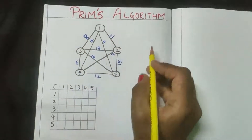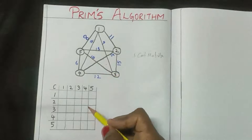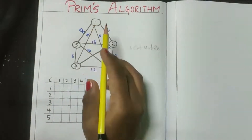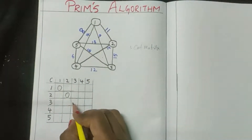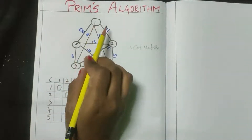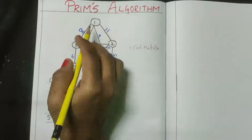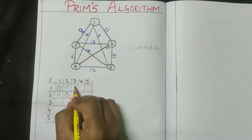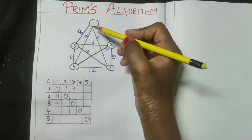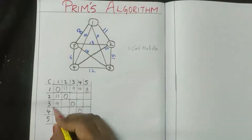To find Prim's algorithm, the first thing you need to do is build the cost matrix table. You need to convert this graph into a cost matrix table to find the distance from one vertex to another. The diagonals — one-to-one, two-to-two, three-to-three — are all zero. From one to two and two to one the cost is 11. One to three and three to one is nine. One to four and four to one is seven. One to five and five to one is eight.